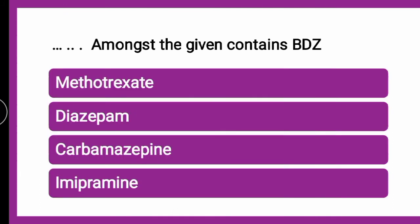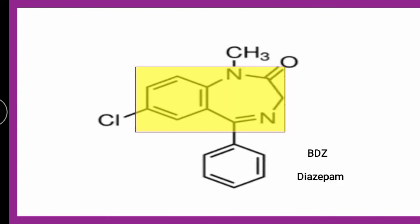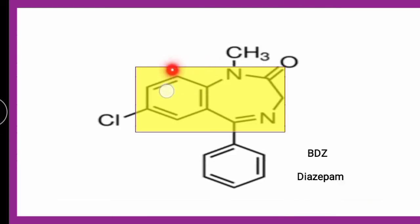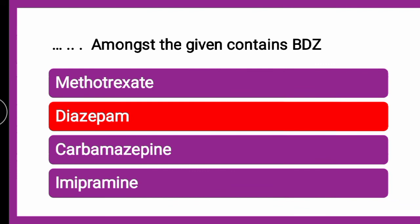The next question is: Which amongst the given contains a benzodiazepine (BDZ) heterocycle? Whether it is methotrexate, diazepam, carbamazepine, or imipramine? The correct answer is diazepam. Diazepam belongs to the class benzodiazepine — containing benzene fused with a diazepine seven-membered ring, hence benzodiazepine. Note that carbamazepine contains a dibenzazepine ring, not benzodiazepine.